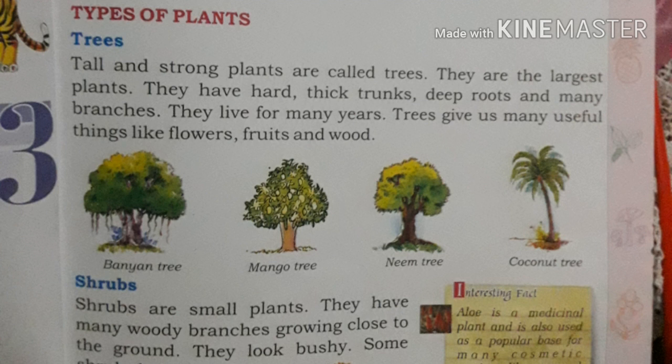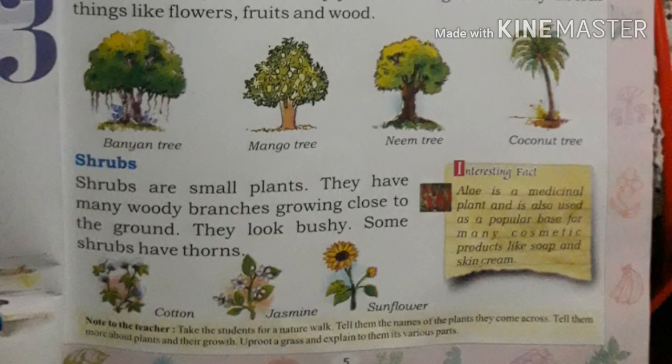The next type of plants are shrubs. Shrubs are small plants. They have many woody branches growing close to the ground. They look bushy. Some shrubs have thorns.